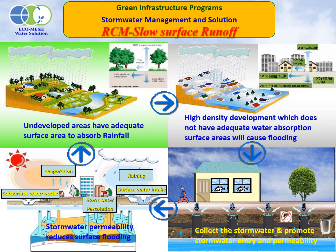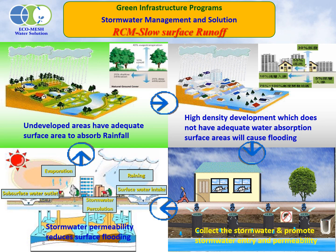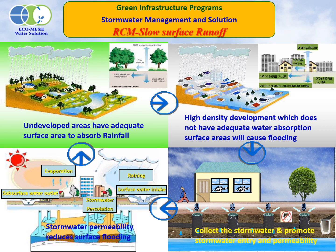The Rainwater Conservation Module permeates rainwater and avoids flooding. Before cities developed, there was enough bare ground for permeation of rainwater to maintain ecological balance. Because of high-density urban development, there is not enough bare ground for permeation of rainwater to avoid floods. This approach is referred to as artificial permeation, which makes up for the lack of natural permeation. RCM collects rainwater, reinforces permeation of rainwater, and avoids flooding of surface runoff.